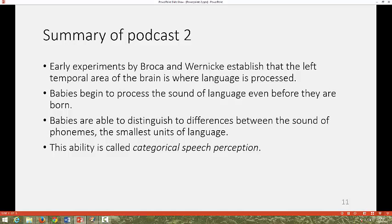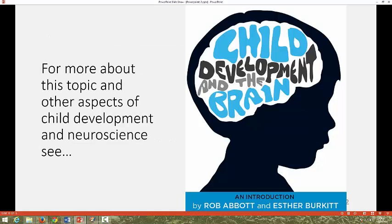In this podcast, we have looked at the early work of Broca and Wernicke. We have also looked at the way babies begin to process the sounds of language and the way that they're able to distinguish between the different sounds. This ability is called categorical speech perception. There is more information about this topic and others in our book Child Development and the Brain.